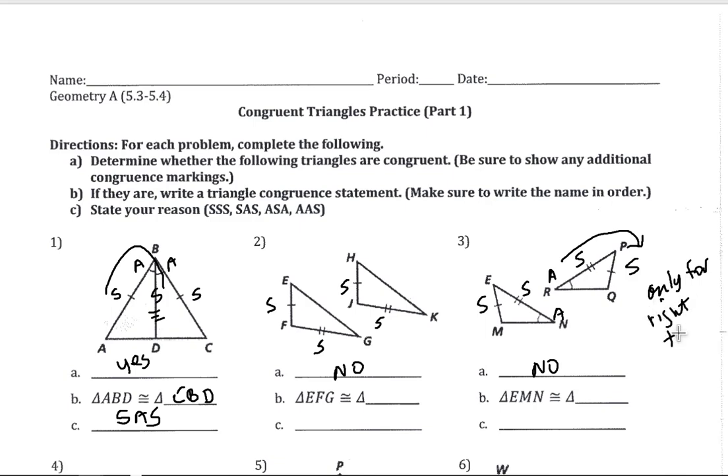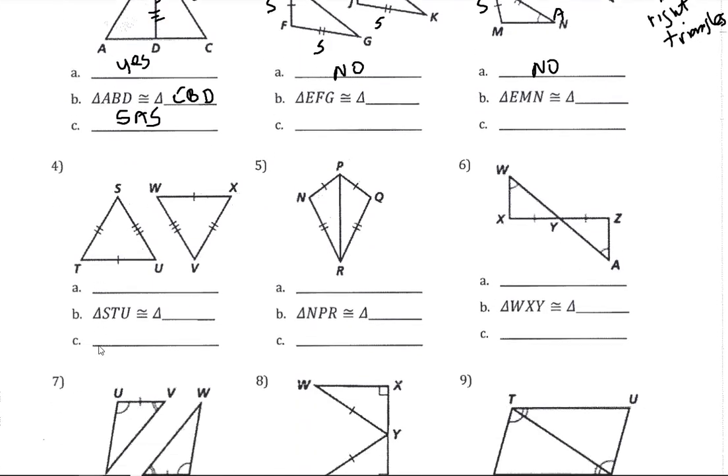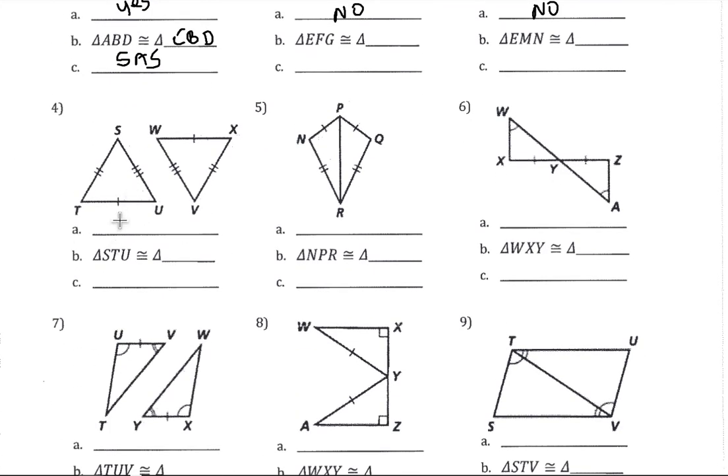In number 3, the patterns are different. We have a side-side-angle pattern, and side-side-angle only works for right triangles. So we don't have a triangle congruent shortcut there.